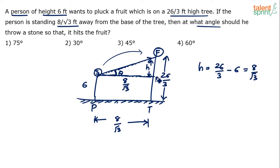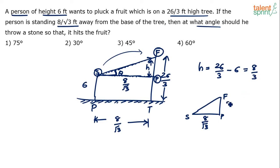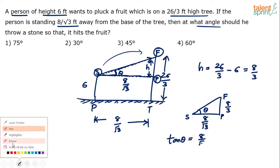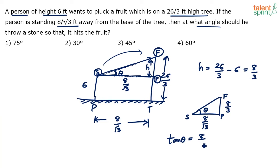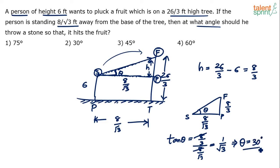Consider the right-angle triangle SPF, where SP is 8/√3 and PF is 8/3. We need to find θ, where tan θ equals opposite over adjacent. So tan θ = (8/3) / (8/√3). The 8s cancel, giving √3/3, which equals 1/√3. Since tan 30° = 1/√3, we conclude θ = 30 degrees, which is option 2.